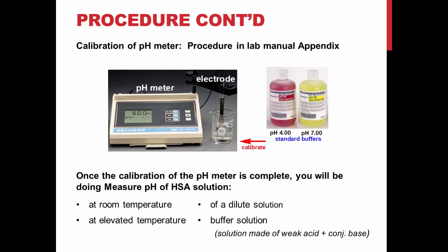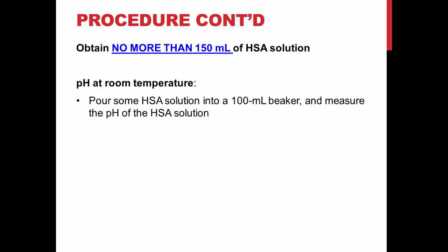Once your pH meter is ready to go, you will measure the pH of a sample of salicylic acid stock solution at two different temperatures. First, take some stock solution in a 100 mL beaker and measure the pH at room temperature.